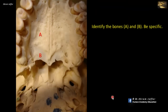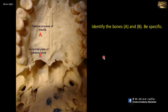Identify bones A and B. This is a view of the hard palate, formed of two bones. A is the palatine process of the maxilla, and B is the horizontal plate of the palatine bone. The anterior two-thirds of the hard palate is formed by the palatine process of the maxilla, and the posterior third is formed by the horizontal process of the palatine bone.